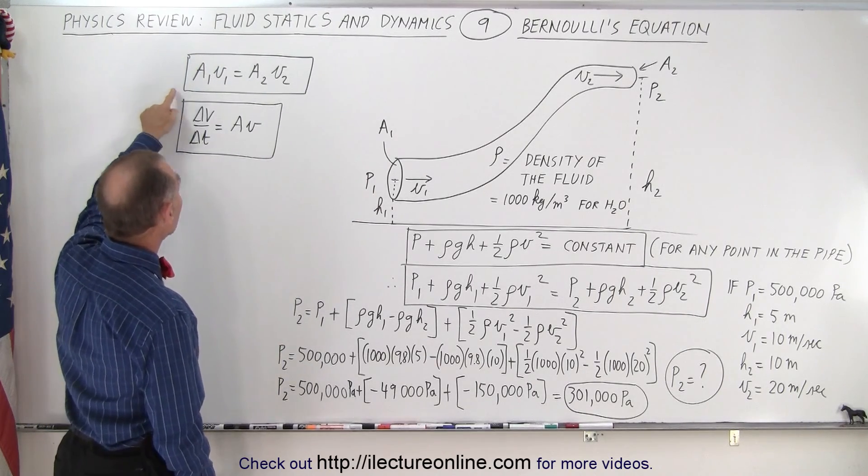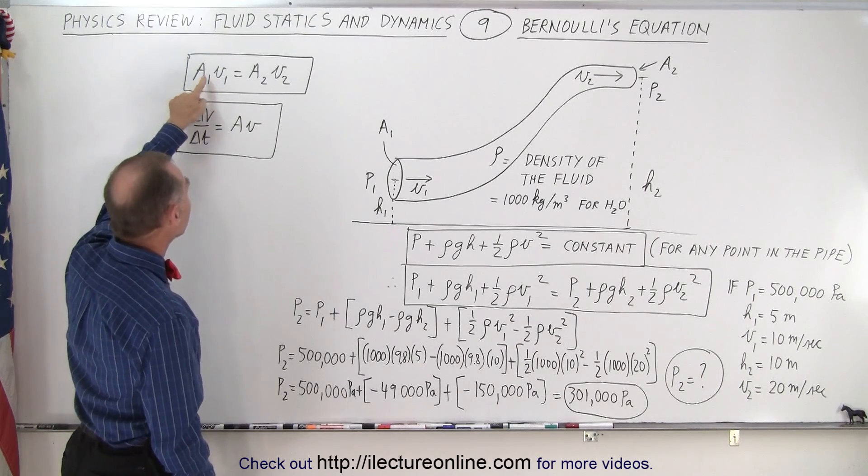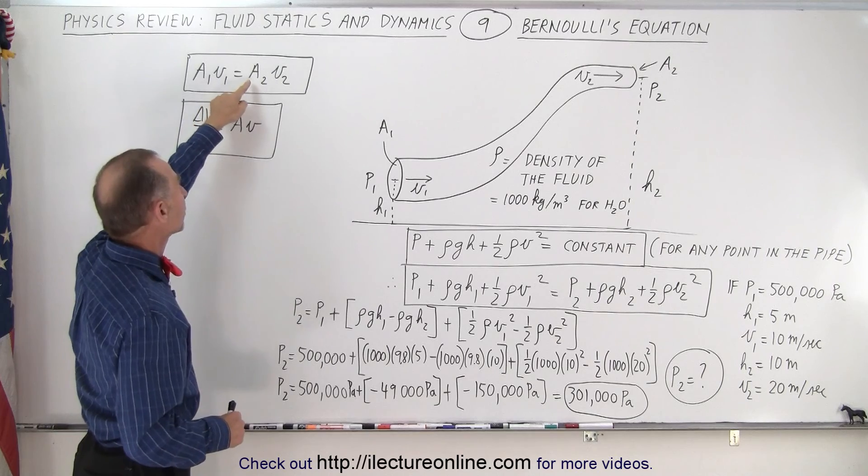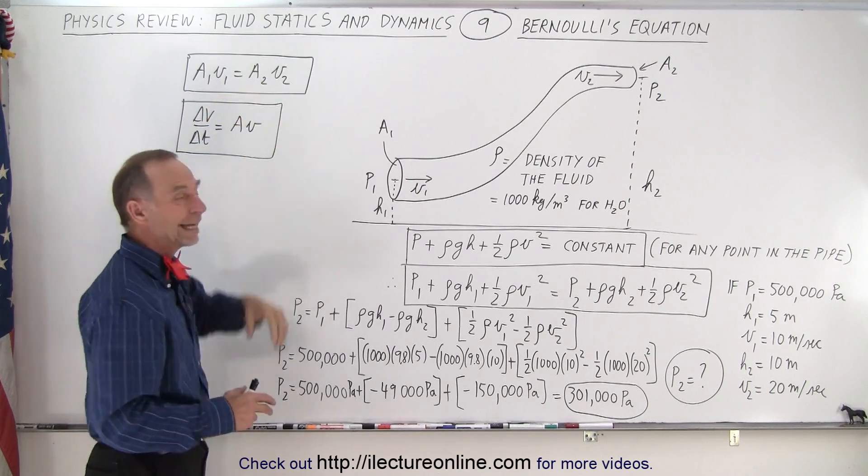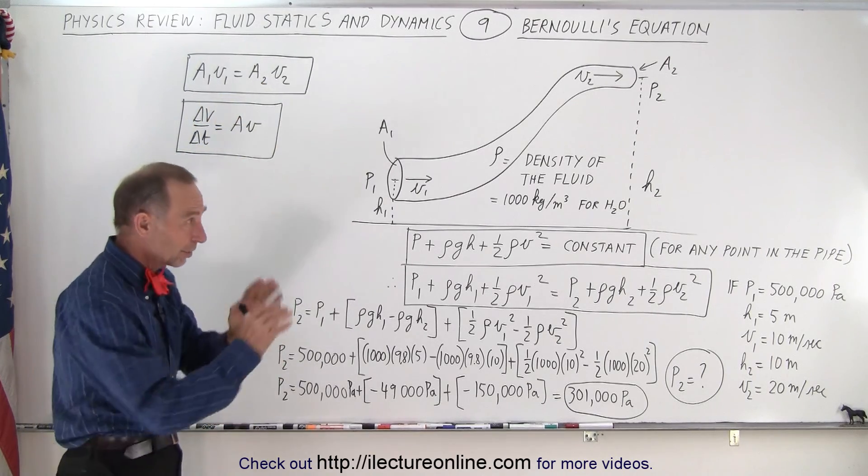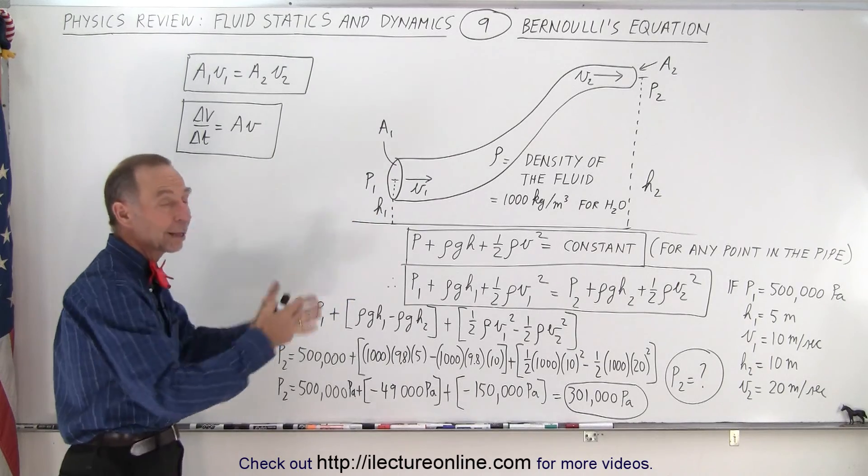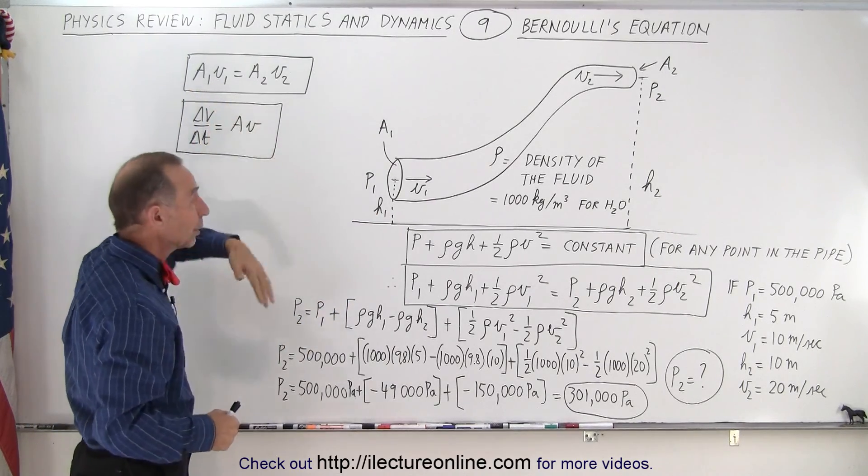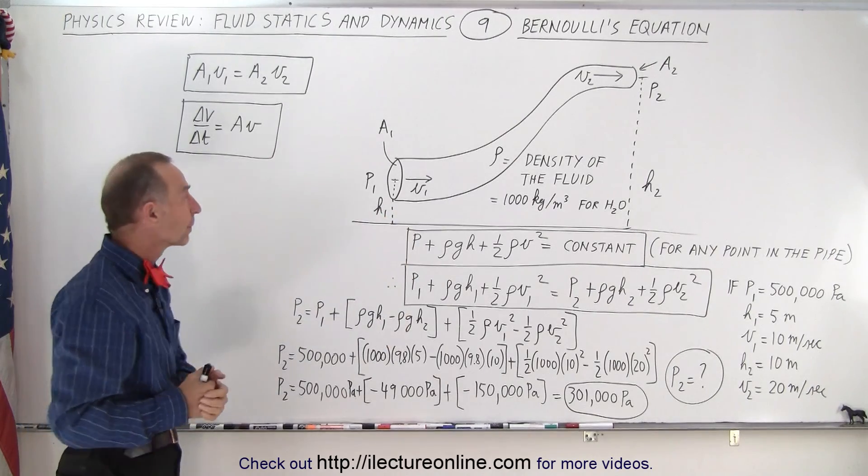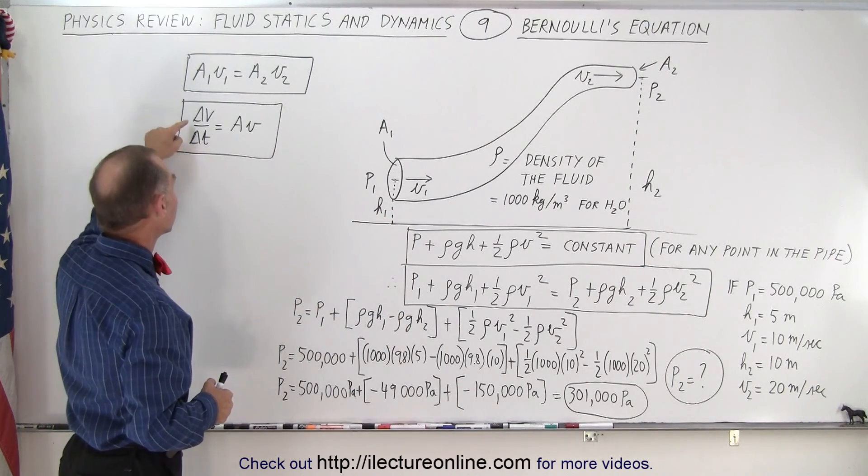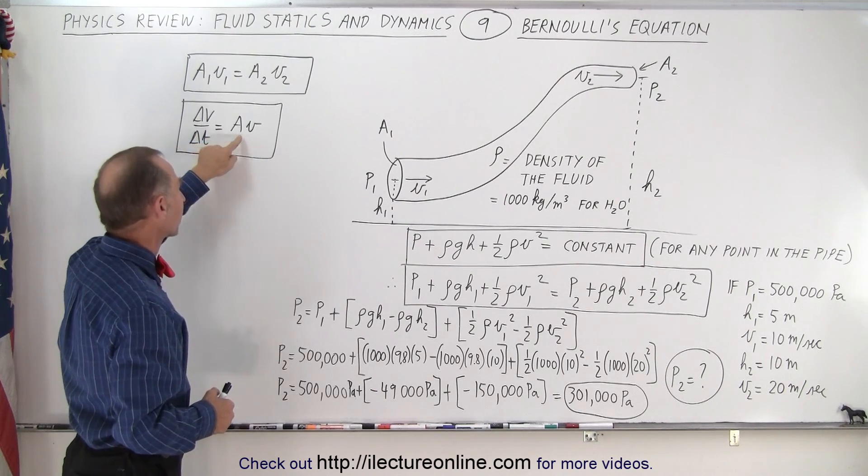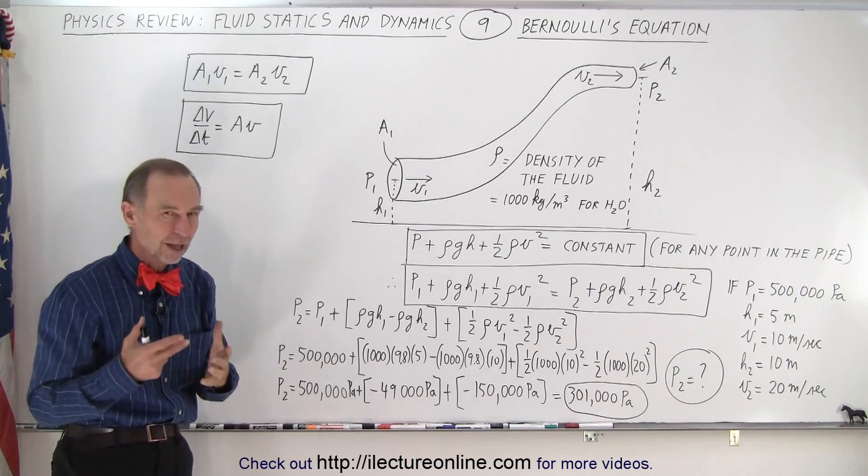We still need to know that the product of the cross-sectional area and the velocity of the fluid at one point in the pipe must equal the product of the cross-sectional area times the velocity in another point in the pipe. And so that applies to applying Bernoulli's equation as well. Sometimes we need to use this equation in order to find one of the unknowns. Also, we need to remember that the amount of volume per unit time that flows through a pipe is always going to be equal to the product of the cross-sectional area times the velocity of the fluid.